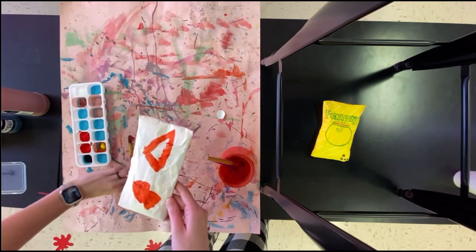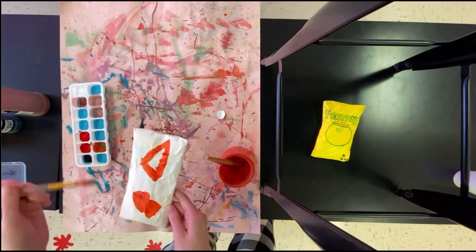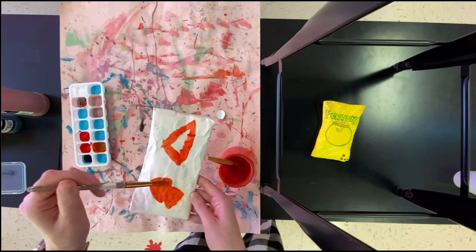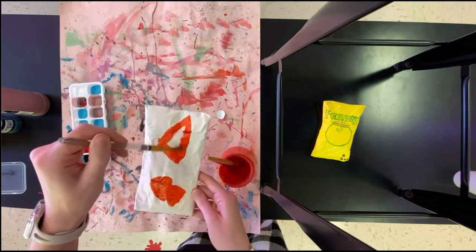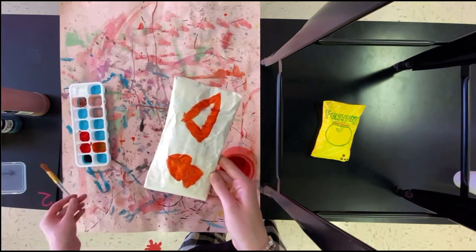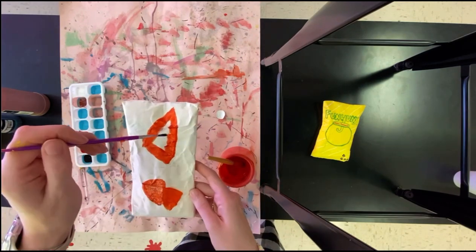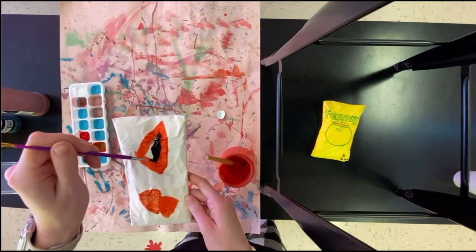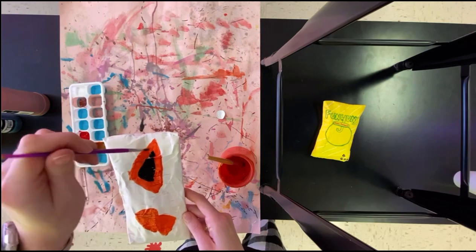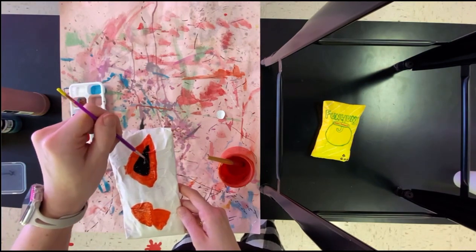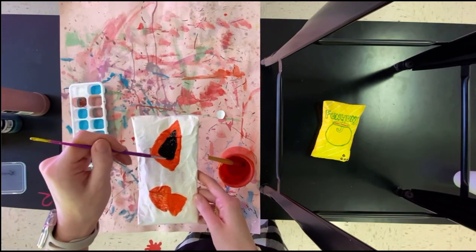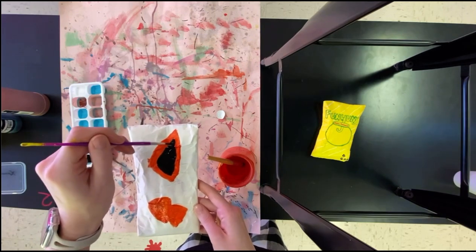Adding in some darker orange to the Doritos so they look maybe a little more realistic, because remember the goal is to fool people and make them think this is a real bag of Doritos. Adding in my black in the middle of my square with a smaller paintbrush.